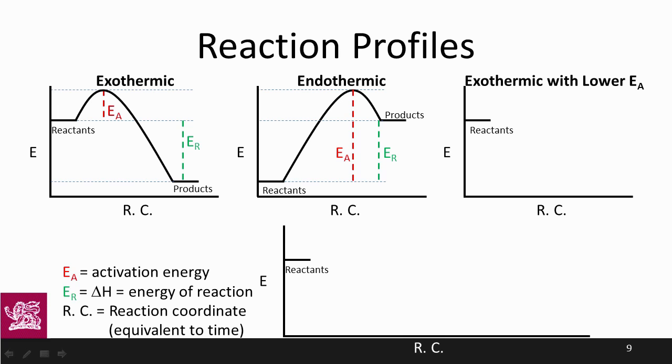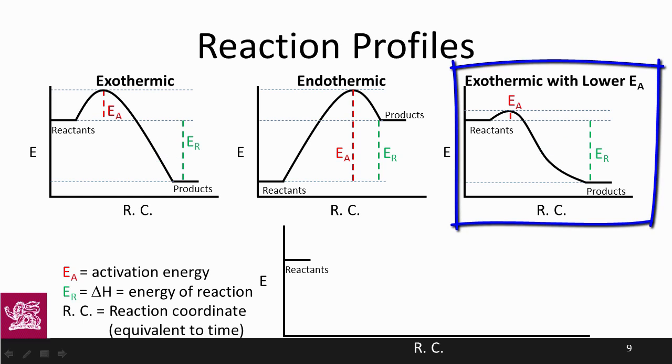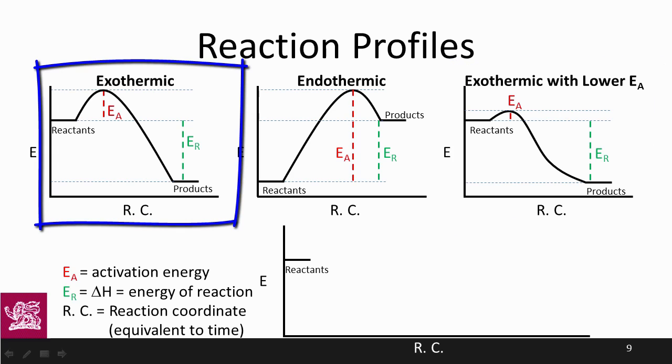If we lower the activation energy, then what we're seeing is a shorter curve up at the beginning. So here we have a much smaller activation energy than we do in the first example, and we have a very similar energy of reaction. What that means is that it's going to take less temperature for this particular reaction to occur compared to this first one, and that this reaction will proceed at a much lower temperature. Maybe this one occurs at room temperature, whereas this first one does not.